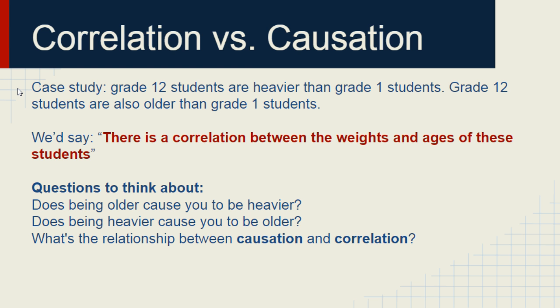Grade 1 students are very close to being babies. Our observation is this: Grade 12 students are heavier than Grade 1 students. And the other thing is, Grade 12 students are older than Grade 1 students. We've got those two observations. We can plot that very nicely in a graph and get some pretty neat results. And then at the end, we can say there is a correlation between the weight and age of these students. This is pretty self-evident.